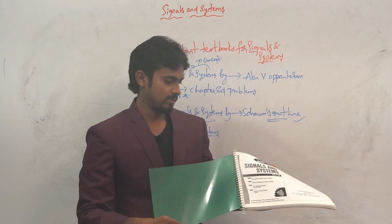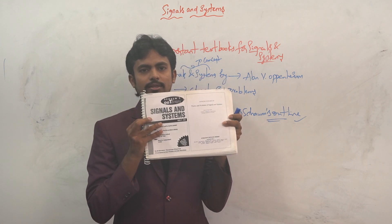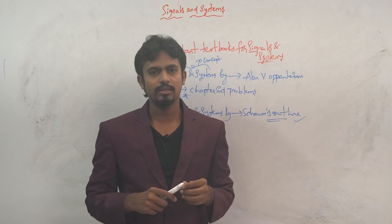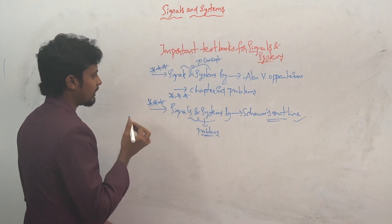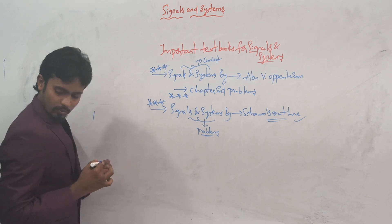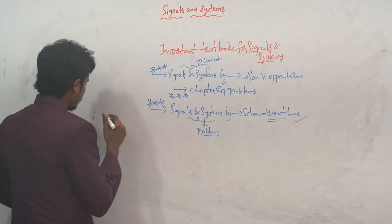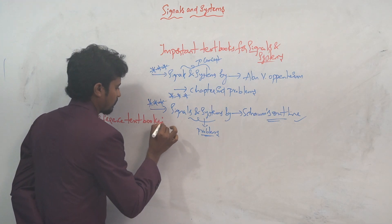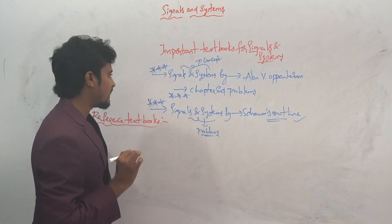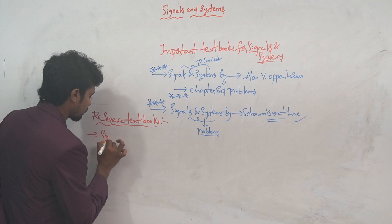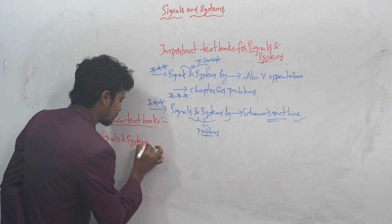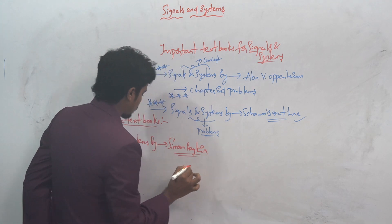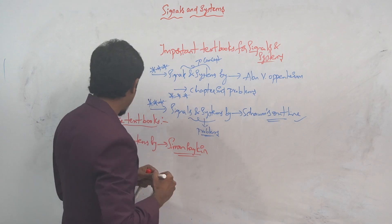The Schaum's Outline textbook will look something like this — there will be a PDF copy available on the internet, you can easily search for it. The next important reference textbook is Signals and Systems by Simon Haykin. This textbook is important from a reference point of view.